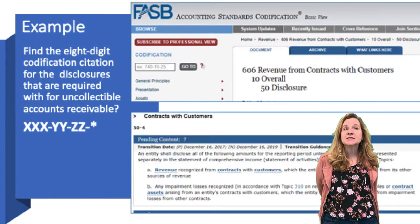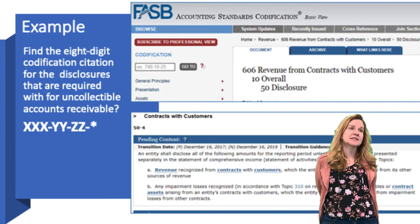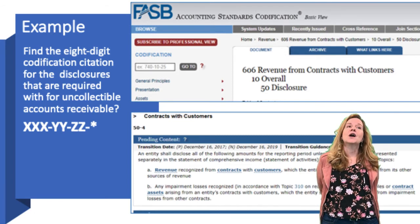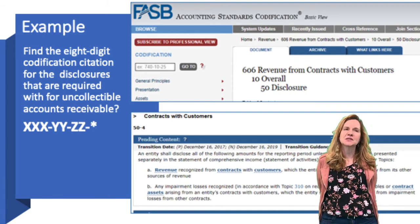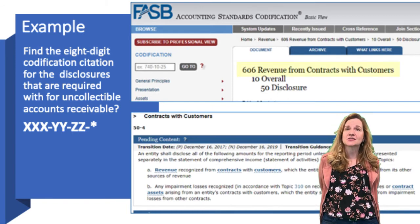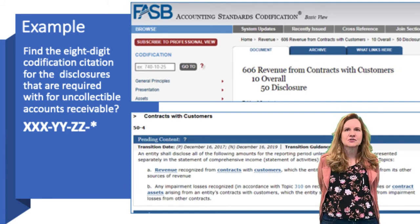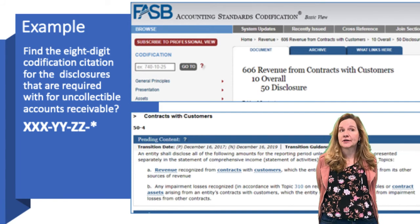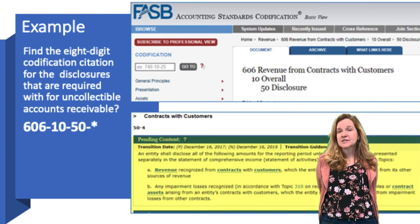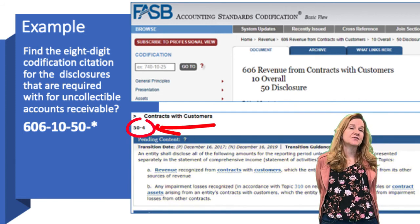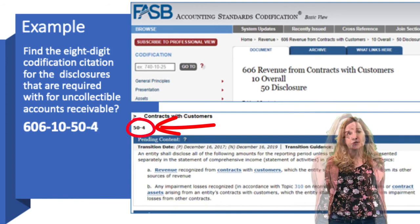Let's look at one more example: find the eight-digit codification citation for the disclosures required for uncollectible accounts receivable. This one's a little tricky because uncollectible accounts receivable is actually located under 606, Revenue from Contracts with Customers. This takes some practice, but as mentioned, a Google search can help you get started. So the citation is 606-10-50, and then 50-4, where 4 is the subsection and 50 is the section. At that point, you're seeing the actual GAAP standard, which you would read to figure out how to apply it.